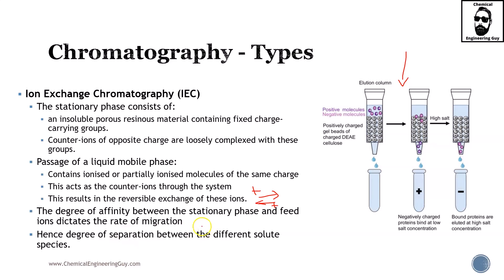The degree of affinity between the stationary phase and the feed ions affects the rate of migration. Hence, degree of separation between the different solute species can occur. So here we go. This is our column, our chromatography column, which is going to be based on ion exchange. You can see all these materials are a gel or contain an area which is positively charged.